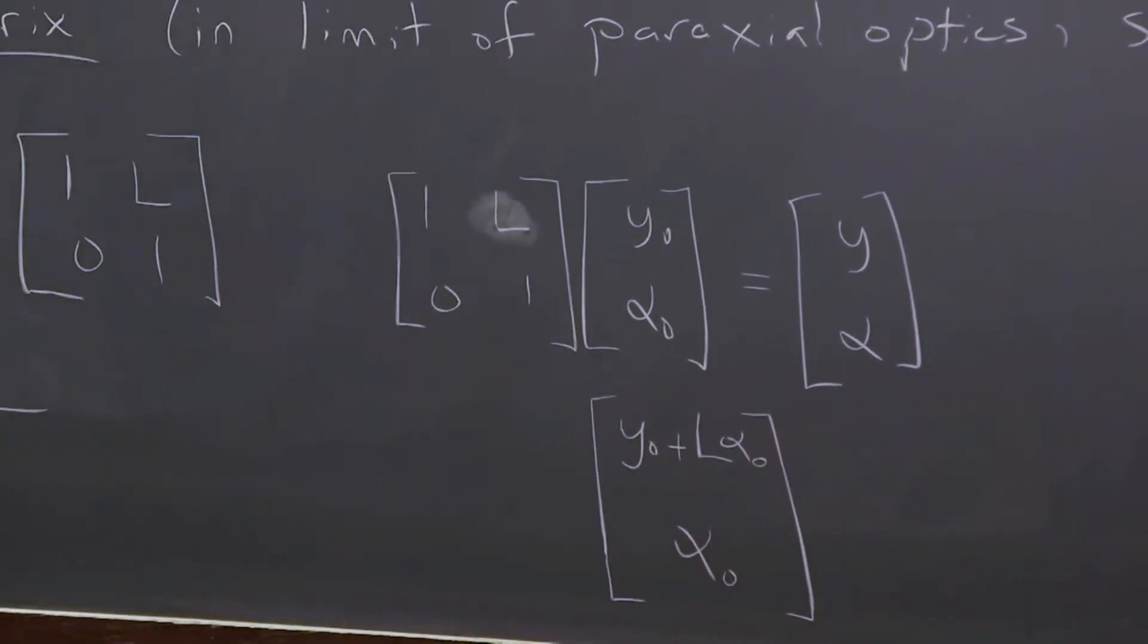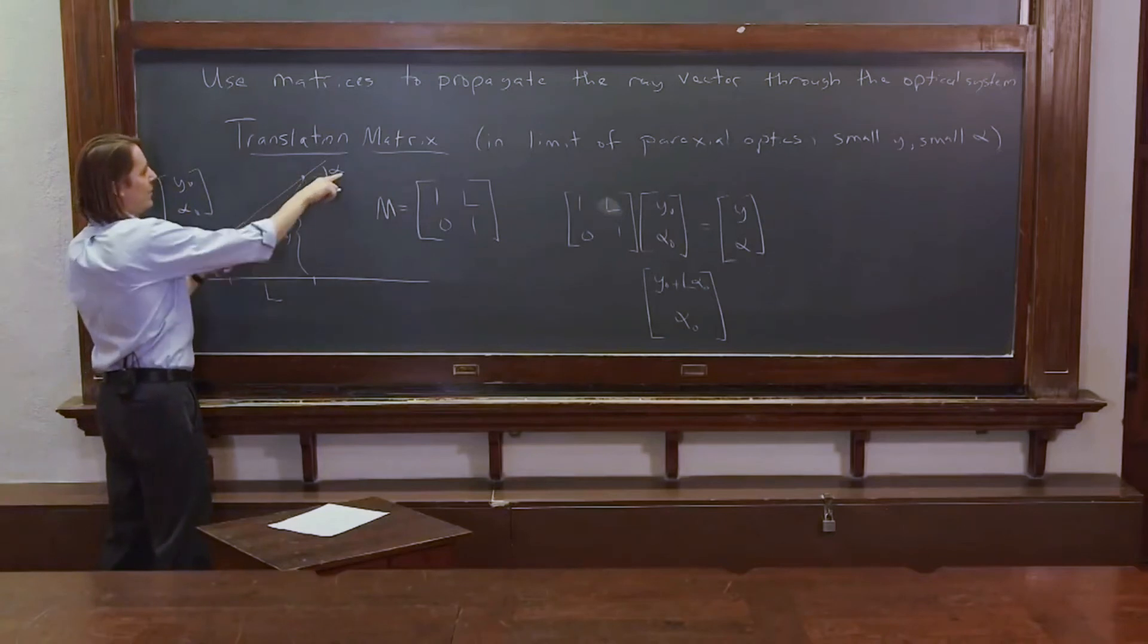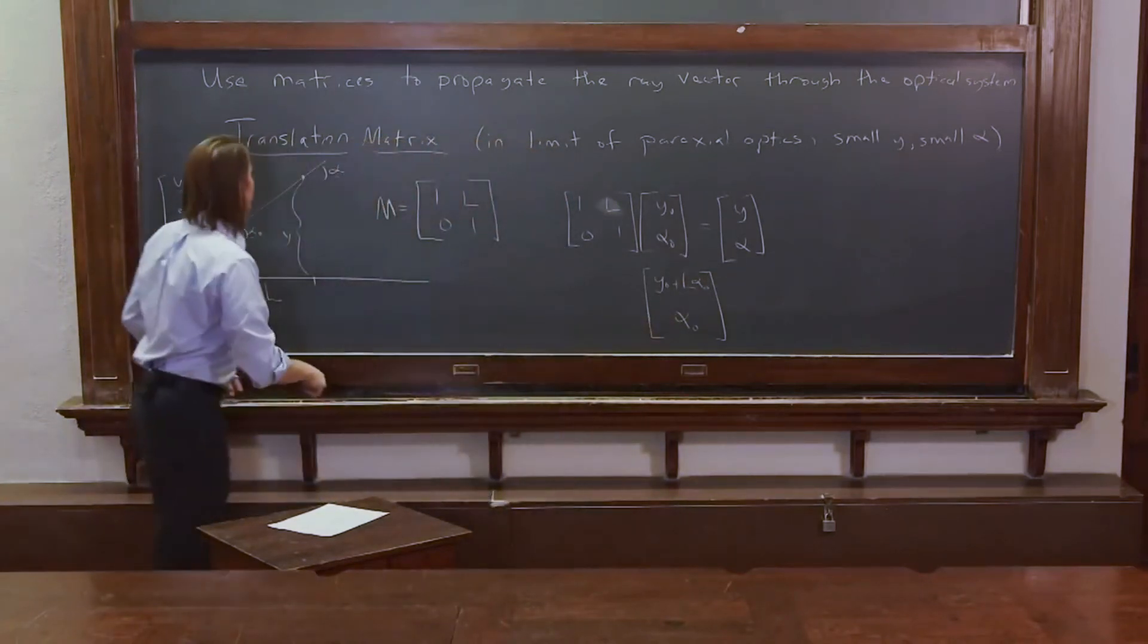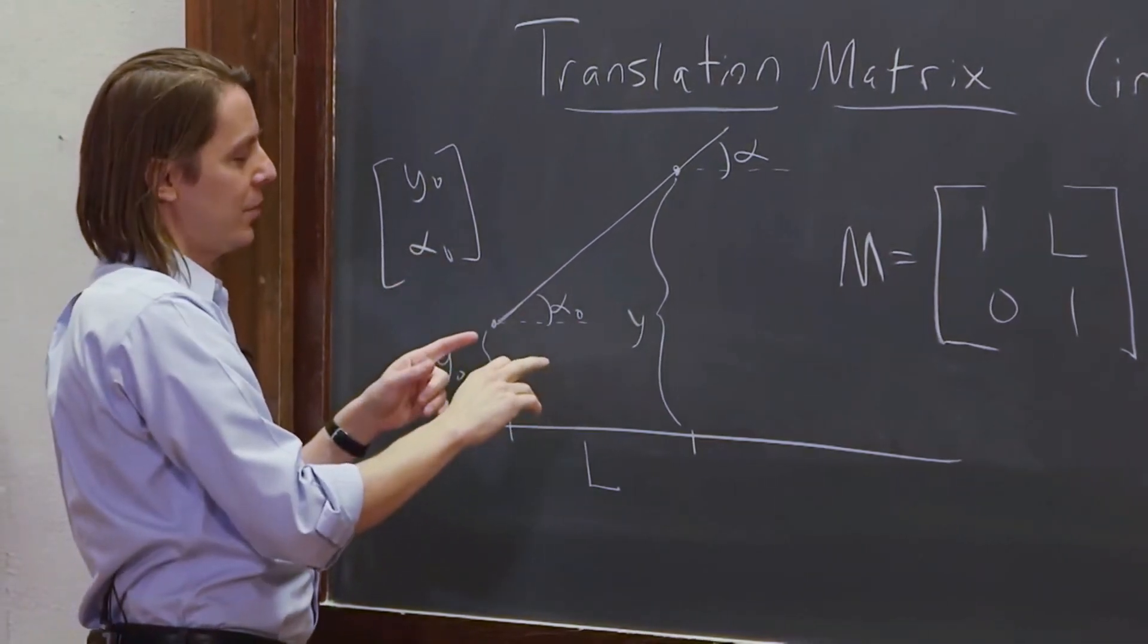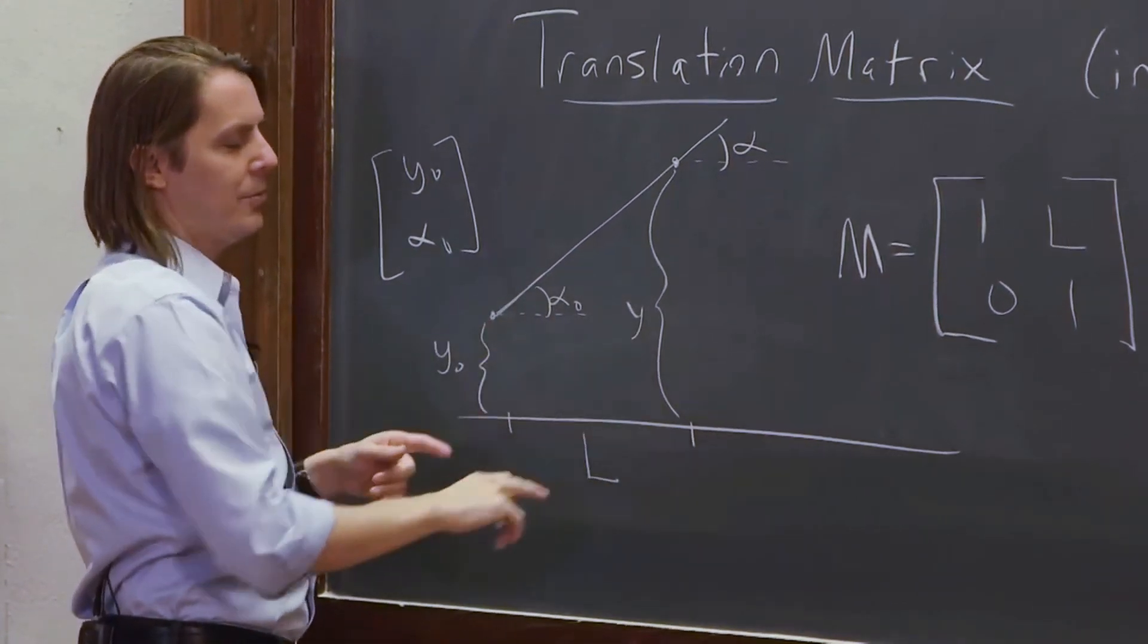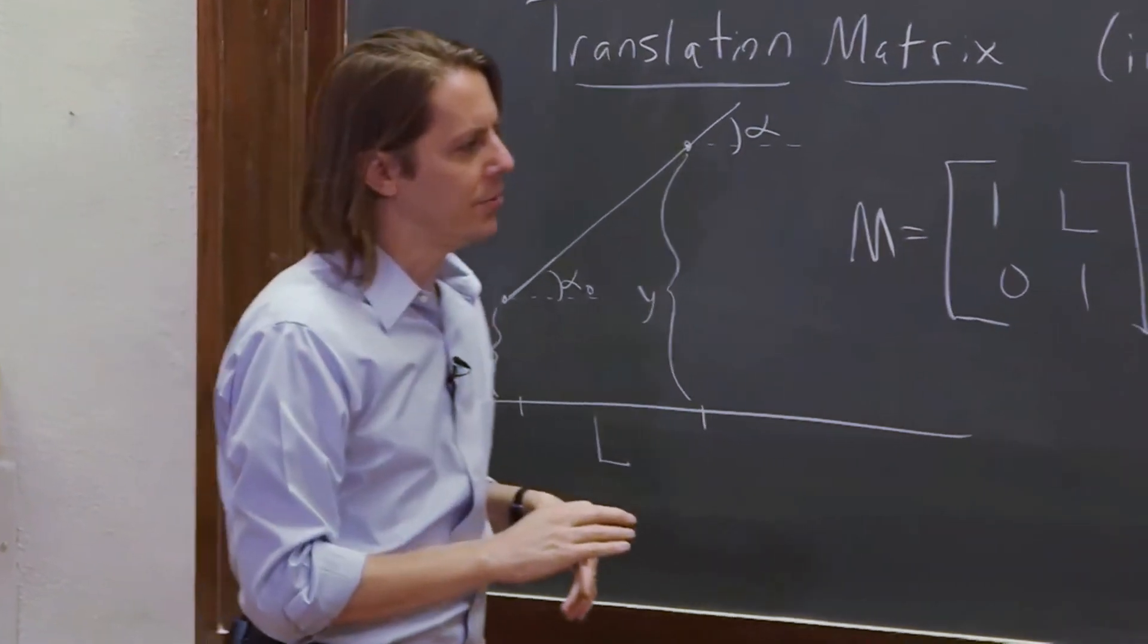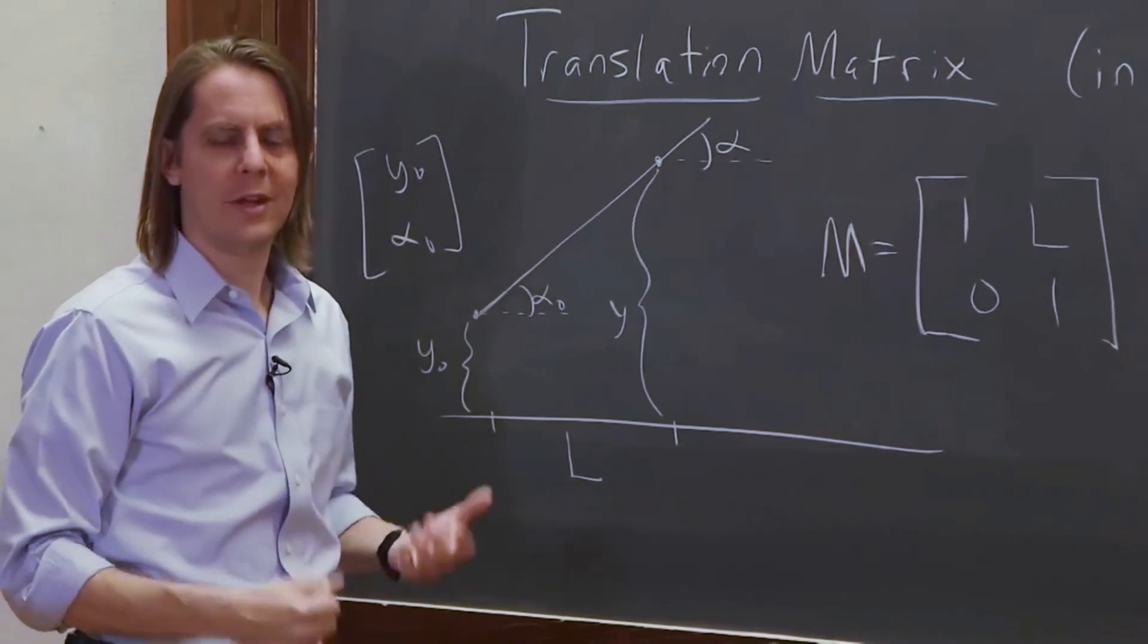And you can see that for small angles, that's actually correct. Well, if this thing goes in a straight line, it's going to be at the same angle. So the new alpha is going to be alpha naught. And how high is it going to go? Well, for small angles, you can approximately say it's going to go a distance of this alpha naught times that distance L. For small angles, sine equals tangent, etc. So you can see for small angles, this simple matrix does work.